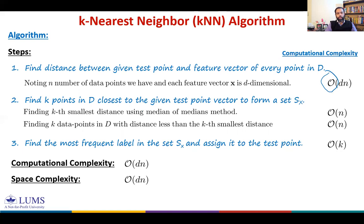In this module we analyzed the computational complexity and storage complexity of KNN. In the next modules — two more modules on KNN — we will first talk about a variant of KNN with relatively better computational complexity, and finally we will discuss the curse of dimensionality, a very interesting concept, and see its consequences on KNN.